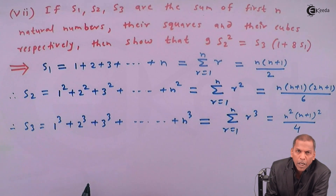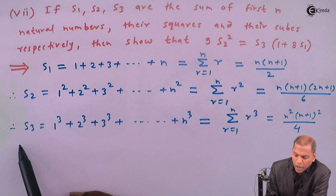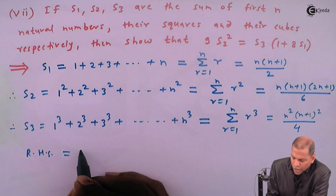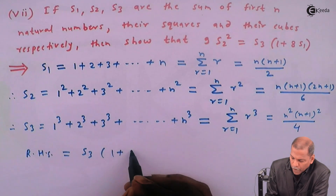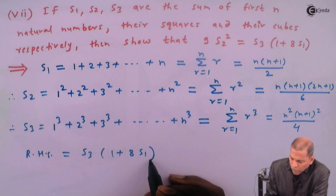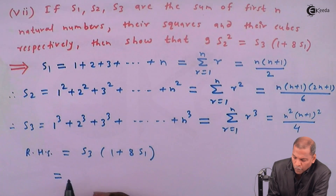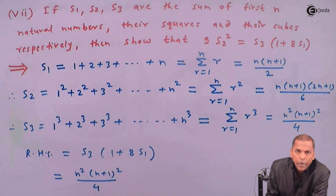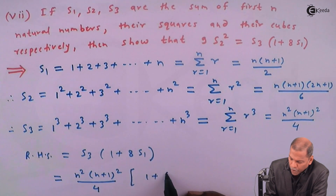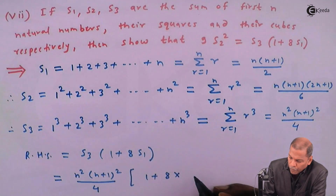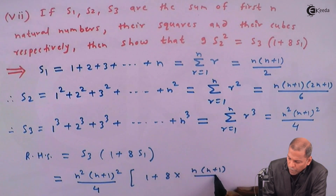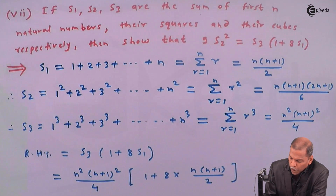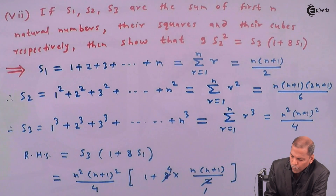So in this way we get results for S1, S2, and S3. Now we start from the right-hand side. RHS = S3·(1 + 8·S1). Substituting, RHS = [n²(n+1)²/4] · [1 + 8 · n(n+1)/2].